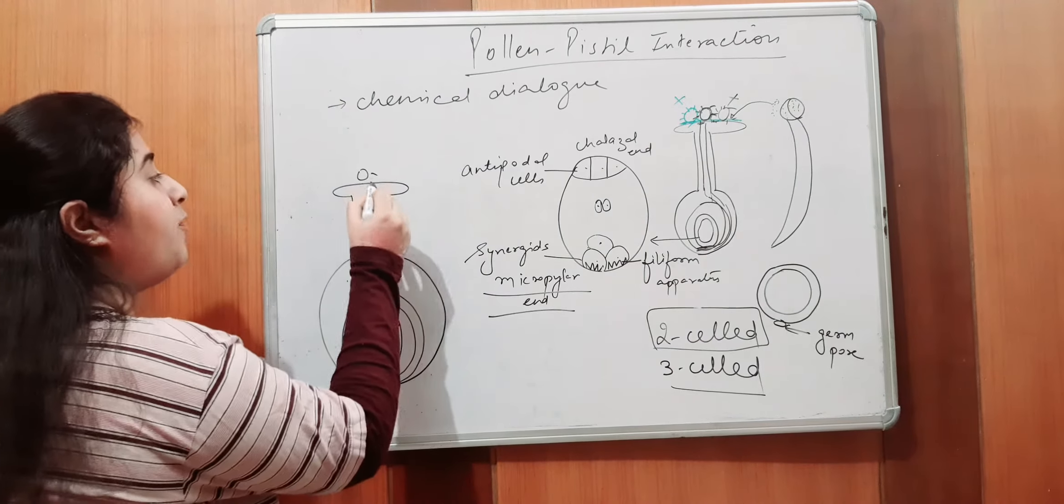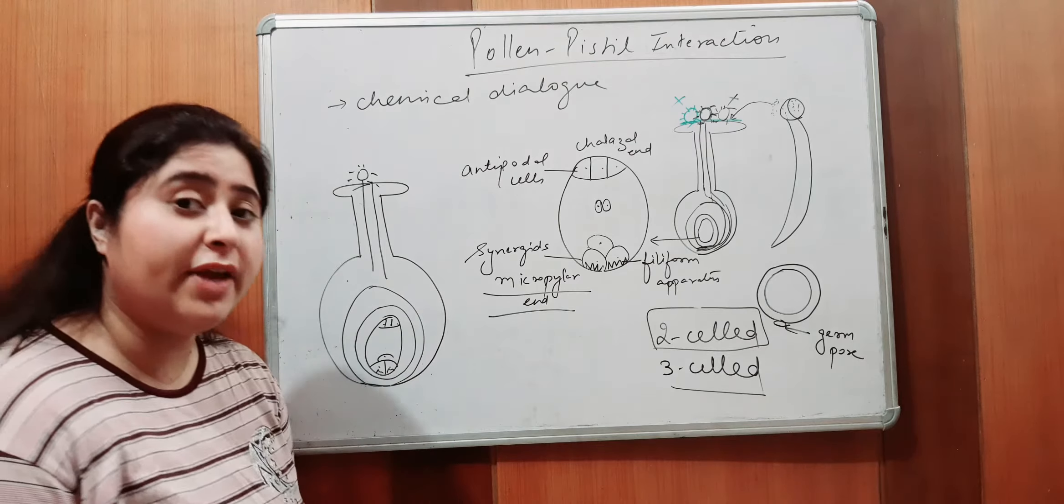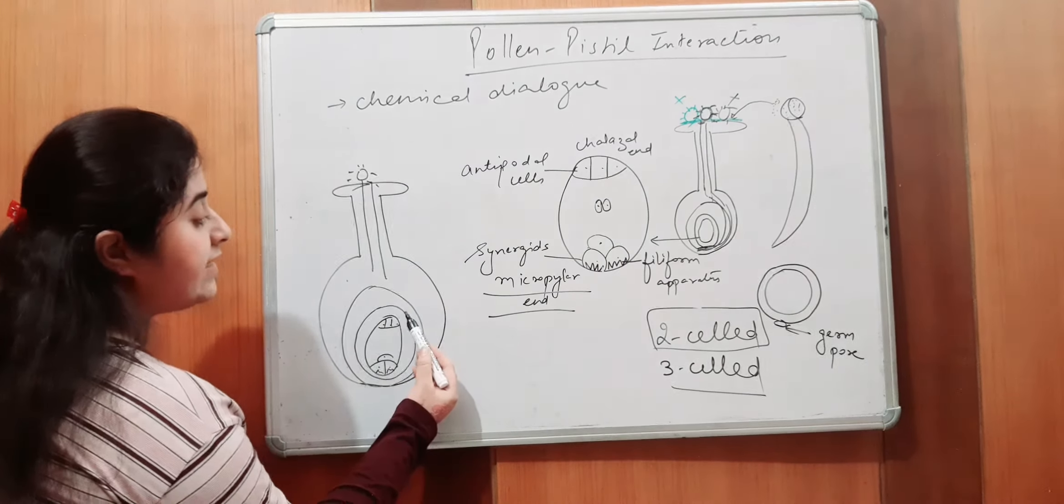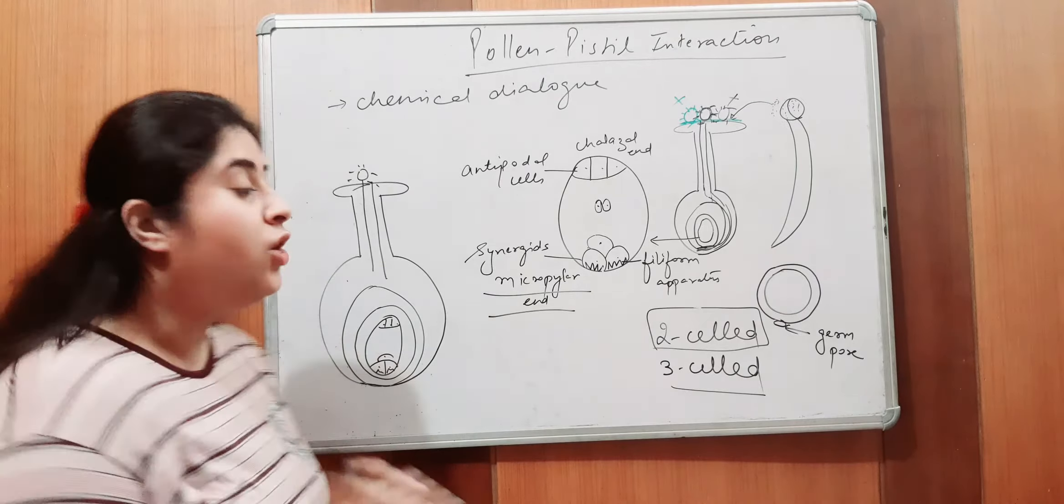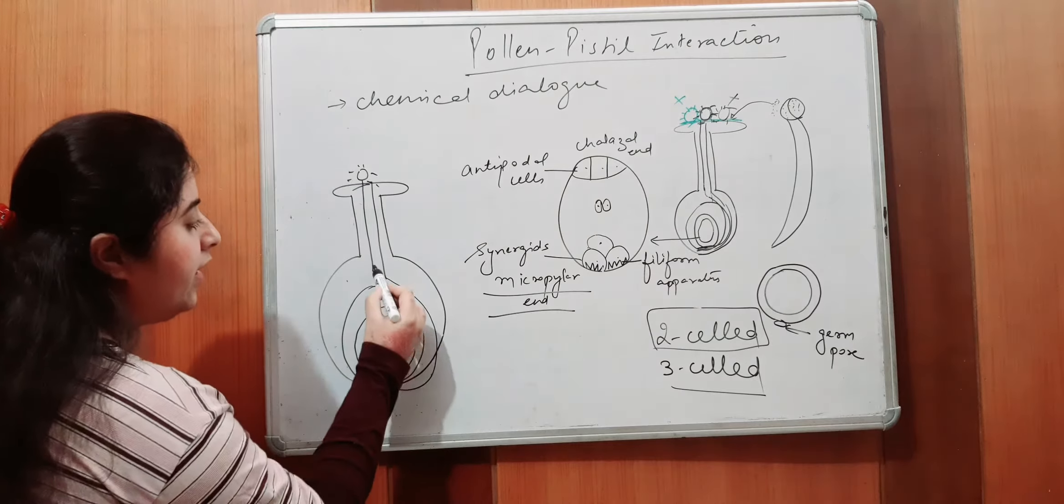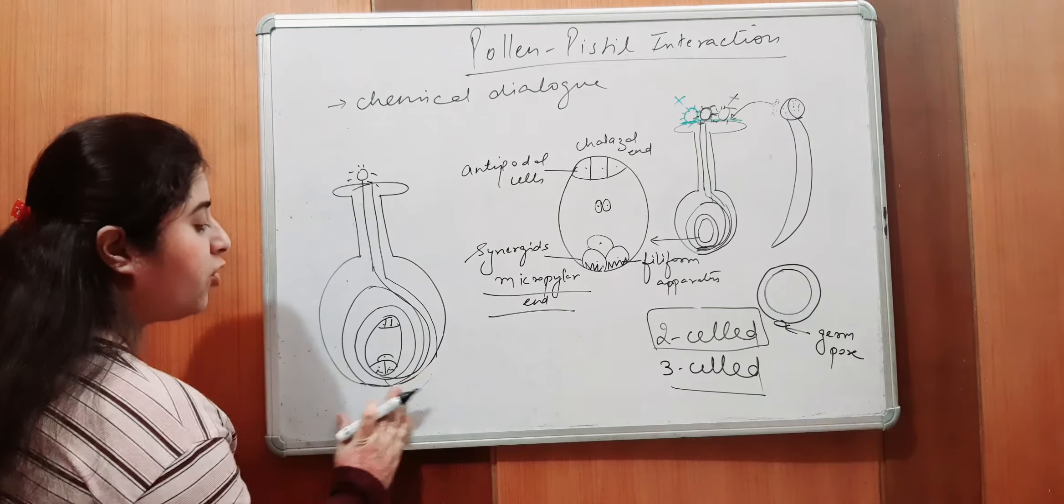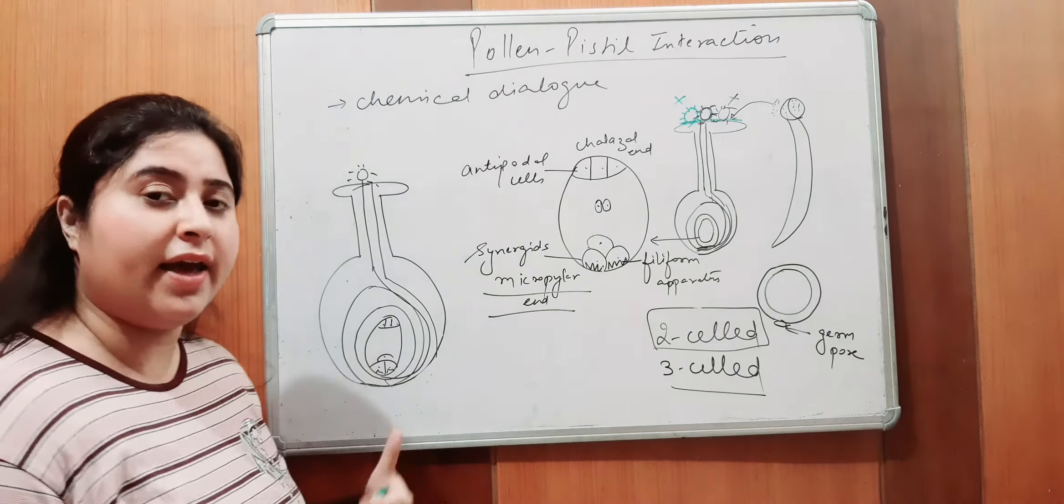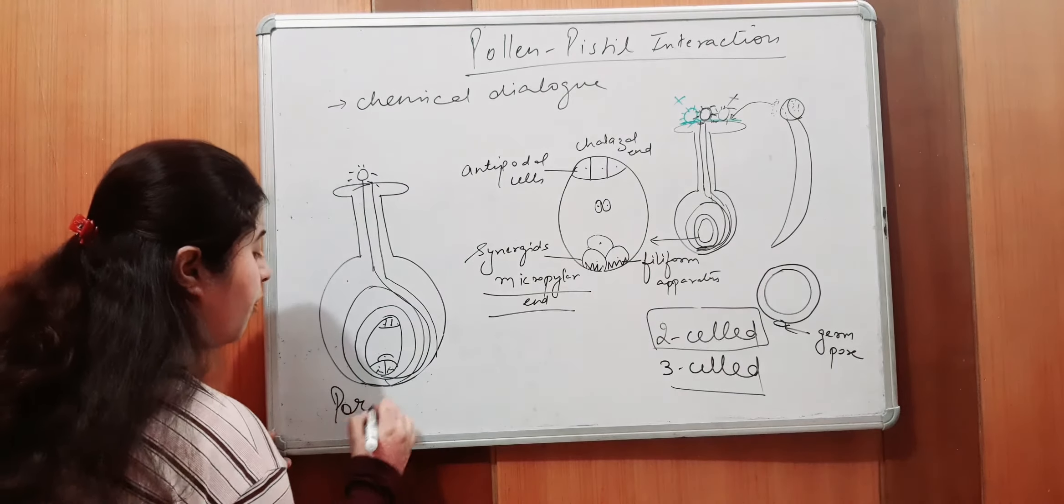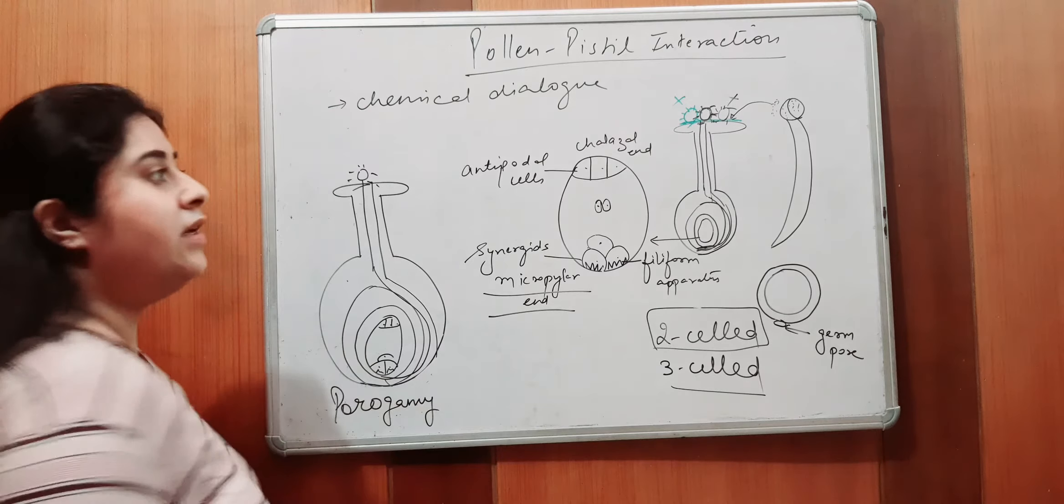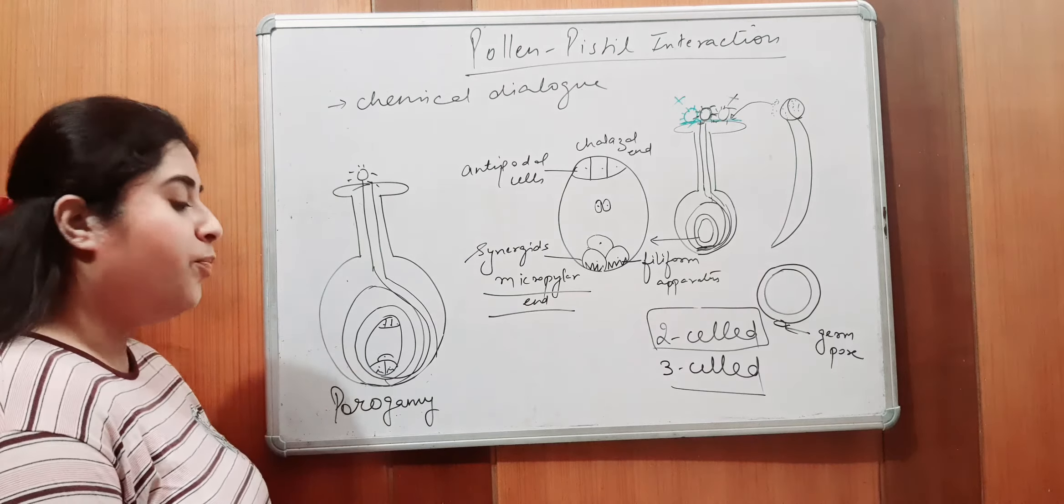Ab, yaha se, pollen grain mein se, pollen tube aai. Toh, there could be the chance when it is entering most of the cases in most of the angiospermic plants. Most of the cases, it will enter through the micropylar end. It will enter through the micropylar end. Micropylar end ke through hi aai gi. That process is called as porogamy. Yes, that process is called as porogamy.